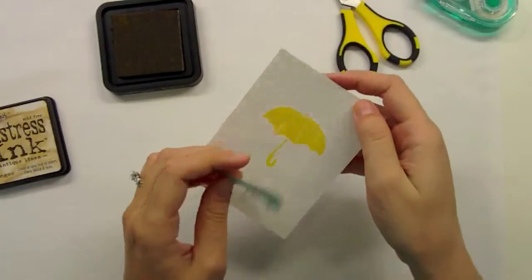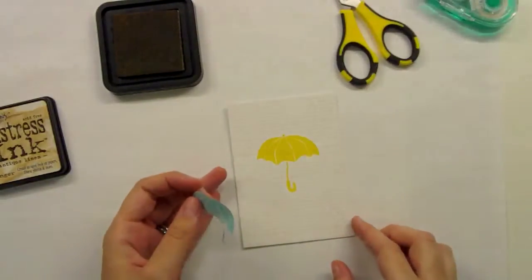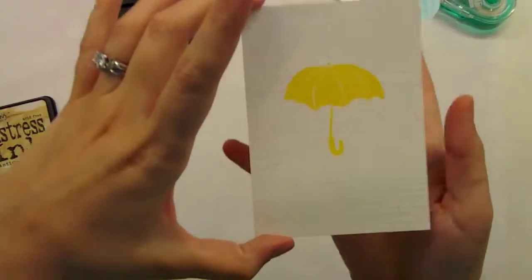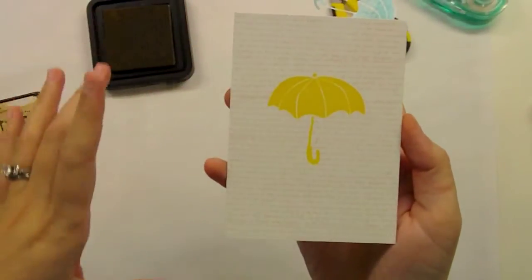I'm taking off that mask now and then you can see that there's a yellow umbrella with text all around it, but the yellow umbrella has remained intact. So I think it's a really fun look.